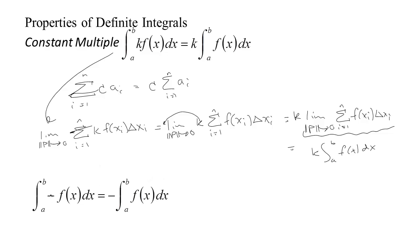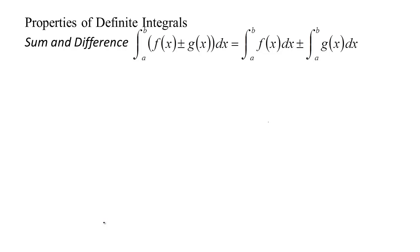One special case: if you have a negative, you can think of that as the constant negative 1 and pull it through. So a negative comes out — just think of that negative as negative 1, then it's a constant you can pull through. Now for the sum and difference property: if you have the integral of the sum or difference of two functions, you can split that up into the sum or difference of two integrals.